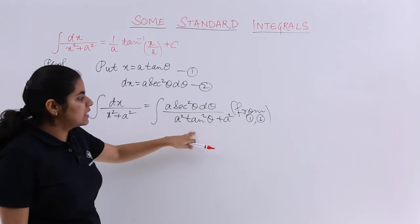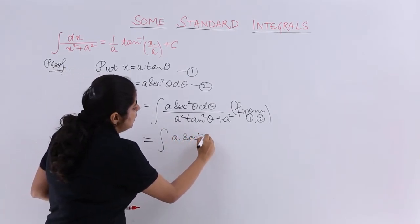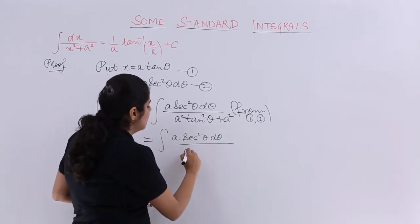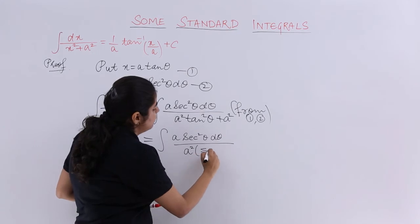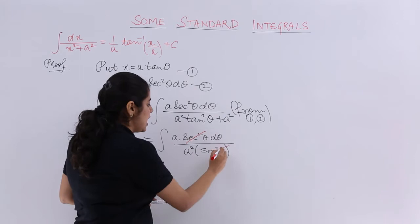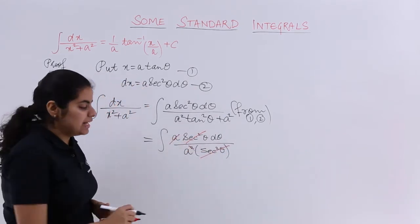Take certain things common, take a square common. So it becomes a secant square theta d theta and here in the denominator a square coming common, 1 plus tan square theta is secant square theta. Cancel whatever cancels. I find that secant square theta cancels. I find that 1 upon a is left.